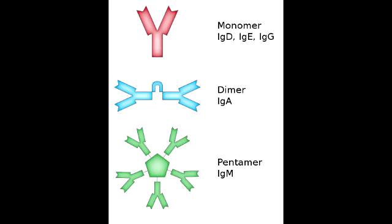IgA is found in secretions such as tears, saliva, mucus, and in early breast milk known as colostrum. Additional notes about IgA: it's a monomer in the circulation and a dimer when secreted. It can also pick up secretory components from epithelial cells before secretion.